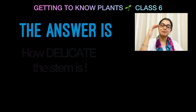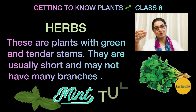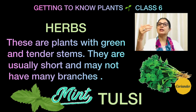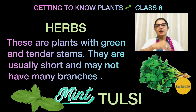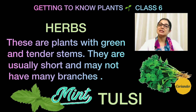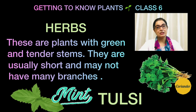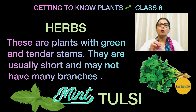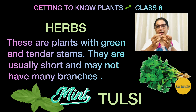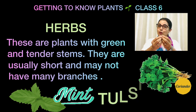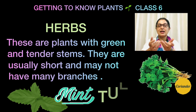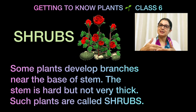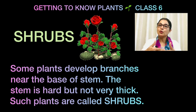Jo sab se chota hai wo sab se delicate bhi hai — the smallest plants also have the softest stems, and they come in the category of herbs. Simple examples are mint, tulsi, and coriander. Jinki bahut delicate stem hai, you can easily break them — they have very soft stems. That is what a herb is.